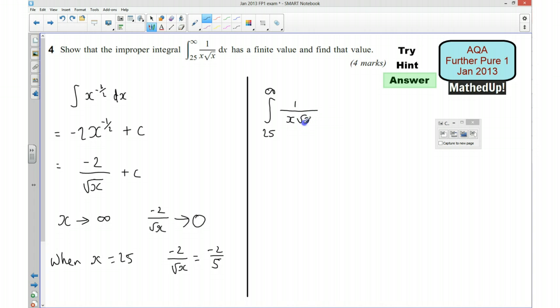0 take away negative 2 fifths, which gives us 2 fifths.